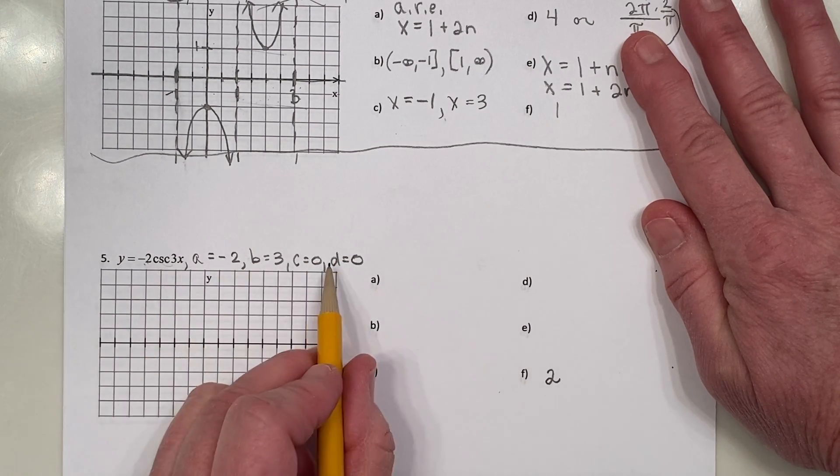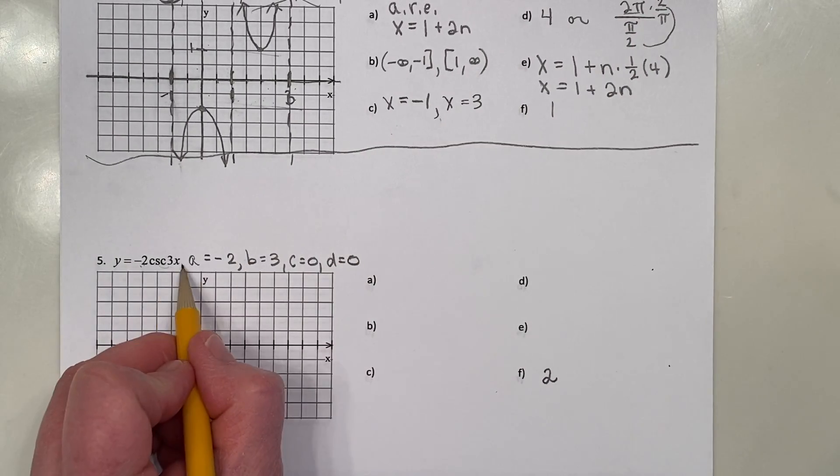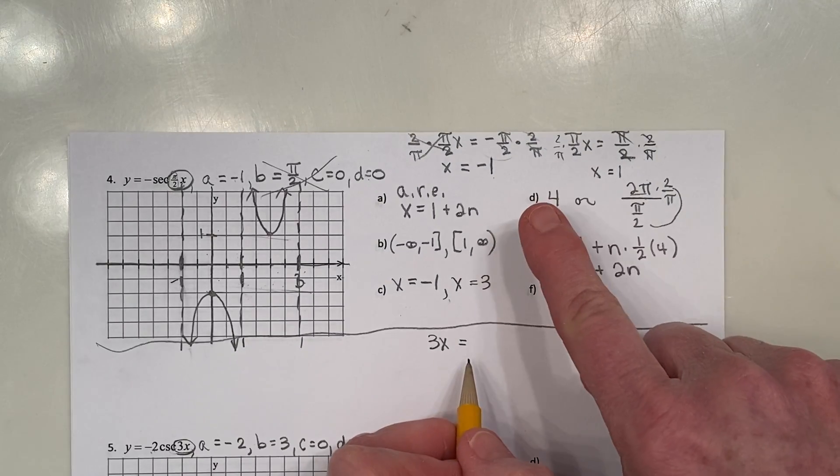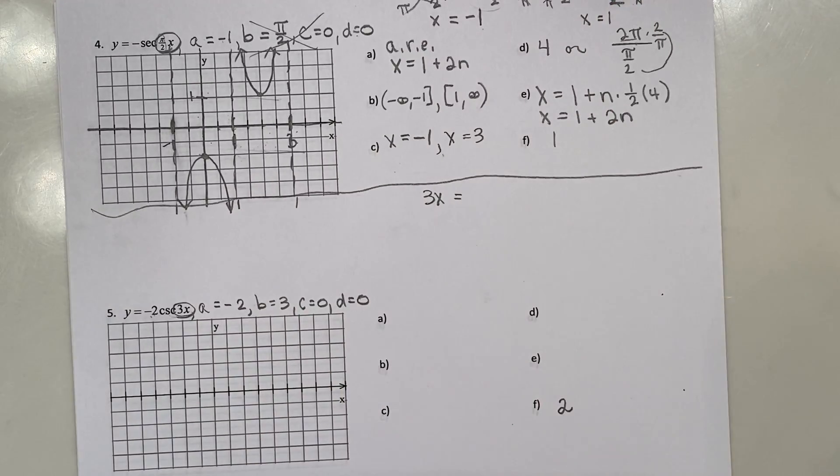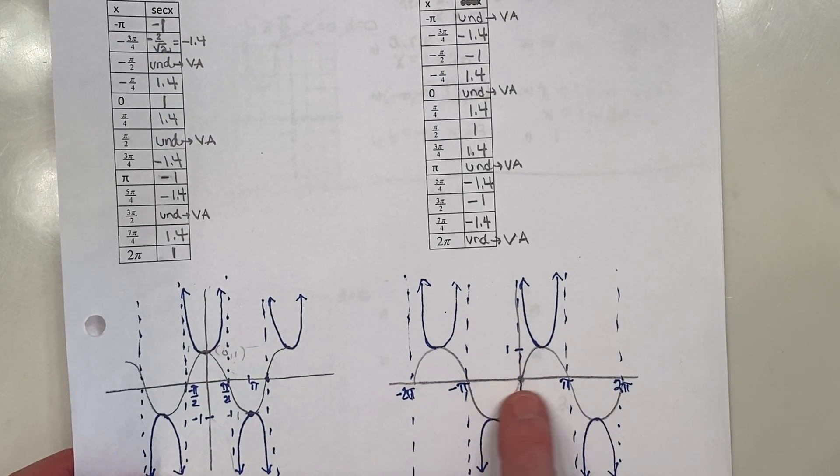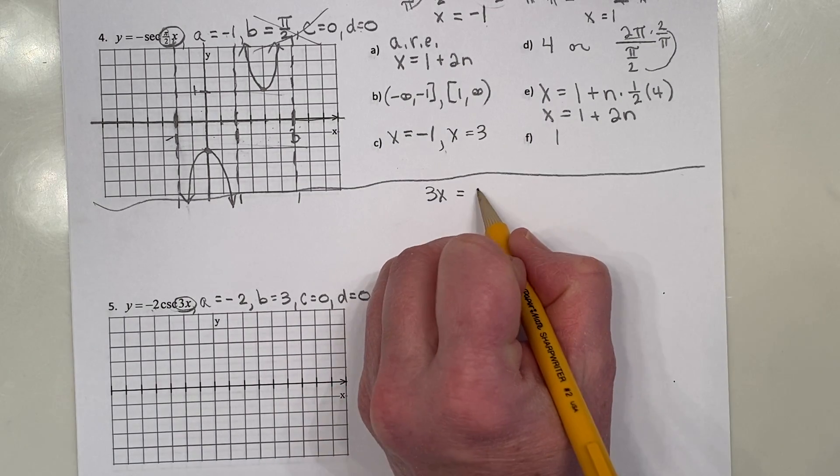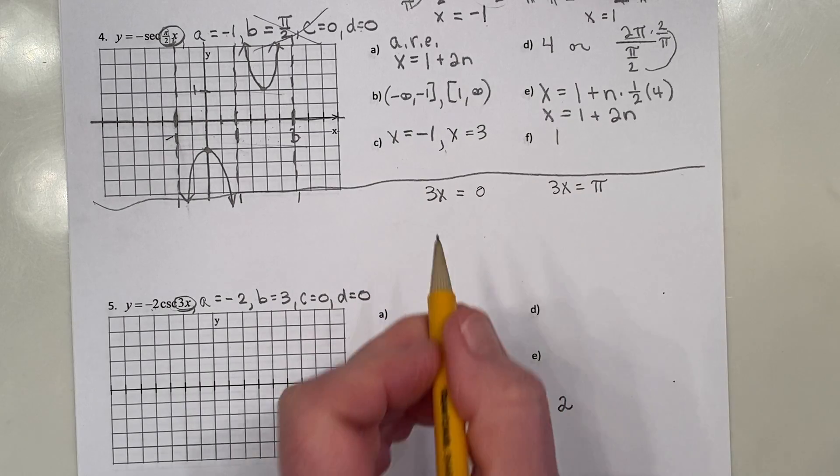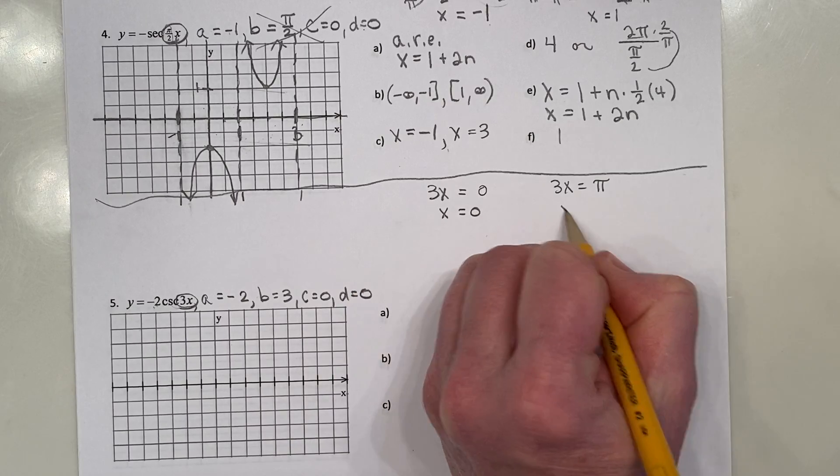So the period won't change and there's no shift up or down. Let's do the LVA and the RVA. So we take Bx minus C. Now, instead of doing like what we did for secant where we set equal to negative π over 2 and π over 2, remember cosecant's two consecutive vertical asymptotes are at 0 and π. So just like cotangent. This will get us one half of the period and then we can build the other one from there. Divide by 3 and divide by 3.